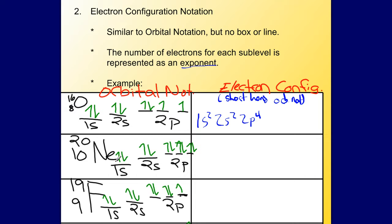Neon's. Again, if you've written the orbital notation for it already, then you can easily do its electron configuration, 1s2, 2s2, 2p6 in this case, 1, 2, 3, 4, 5, 6. Very simple to do.